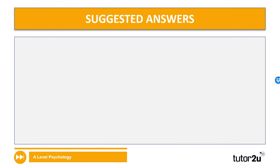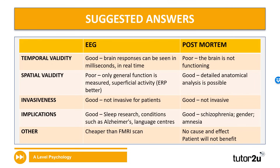Here are some answers you can compare your own to — we'll run through them one by one. Temporal resolution: EEGs are good because brain responses can be seen in real time without any real delay. So if somebody is thinking of something or dreaming, we can see the output on the graph immediately. Unfortunately, in post-mortems the brain isn't actually functioning, so there's no temporal resolution to speak of. Spatial resolution: in EEGs this is quite poor. Even though there's good temporal resolution, the only thing we get from an EEG is general function of the brain — we don't get to measure specifics or identify which part of the brain a brain wave originated from. For that, we need to look at something different like an ERP.